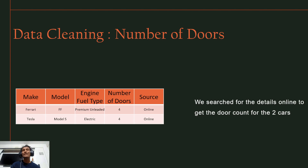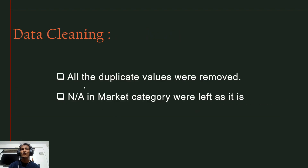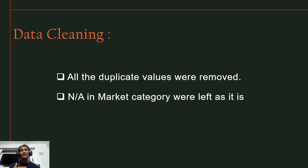For number of doors, missing values were for two vehicles — the Ferrari FF and Tesla Model S — both of which have four doors, so these were imputed with four. About 70 duplicate values were dropped as they add no value to the analysis. A subcategory of NA in market category was left as-is.